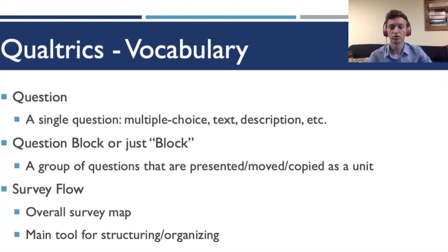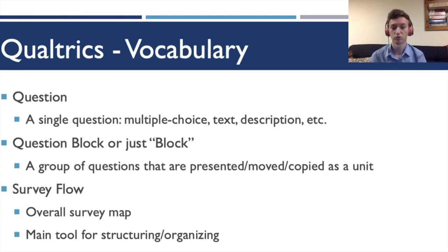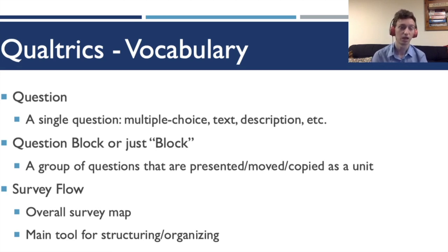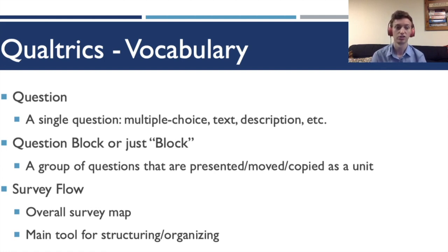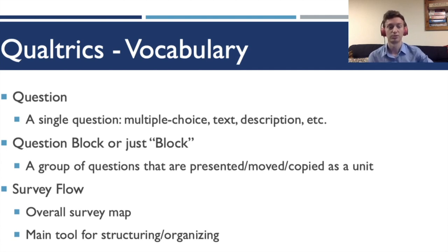Before we get started with a demo, let's go over some basic vocabulary. First you have the question, which can be a text answer, multiple choice, slider questions, and many other types. Questions are usually part of a block — a question block is typically a few questions, which is useful to keep them organized and set up a path for your survey overall. Controlling the organization of your experiment is done in what's called the survey flow, where you map out your experiment and decide where participants go.